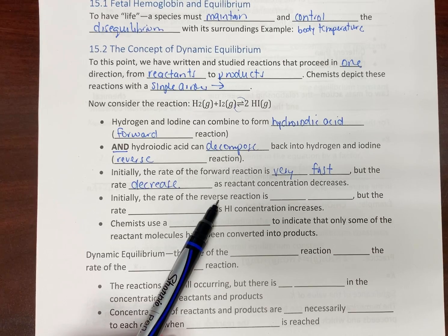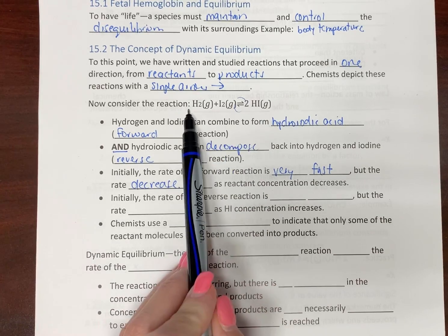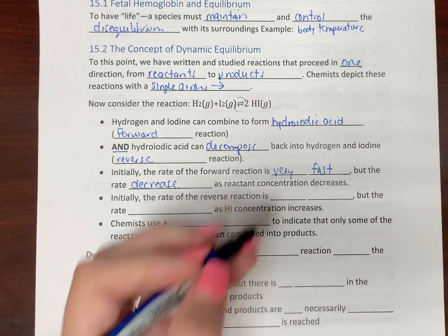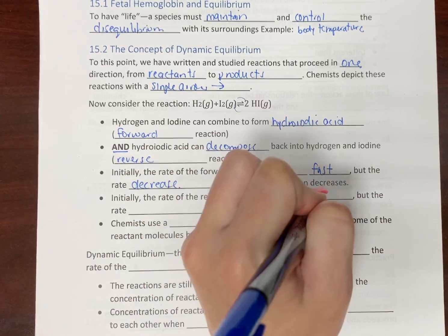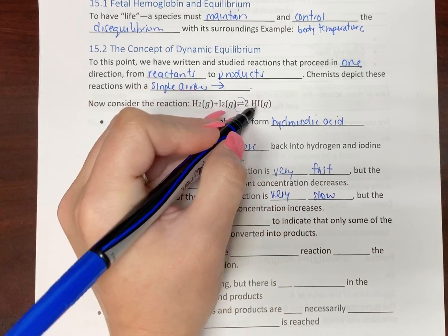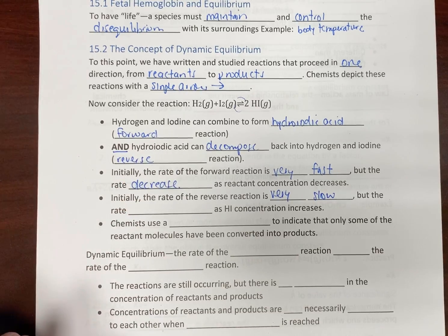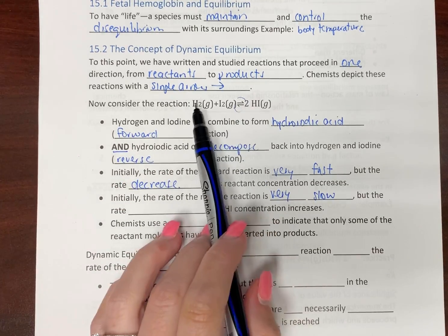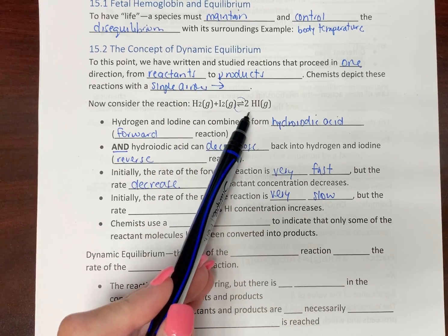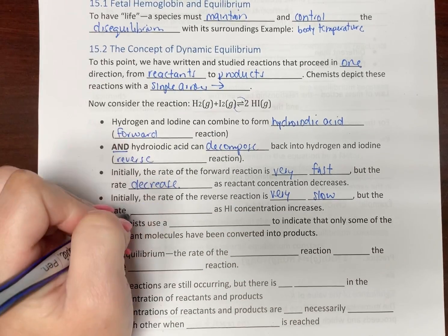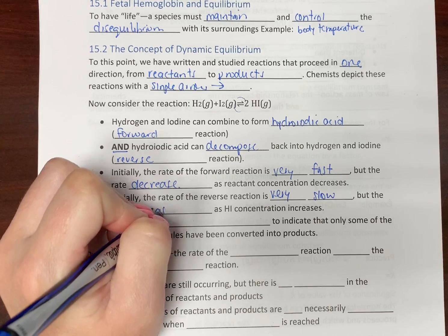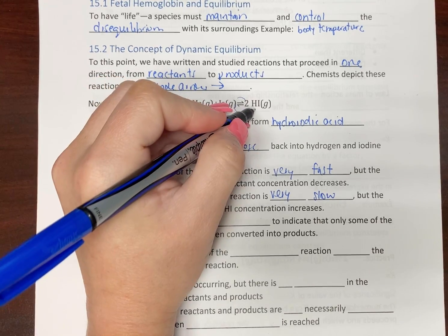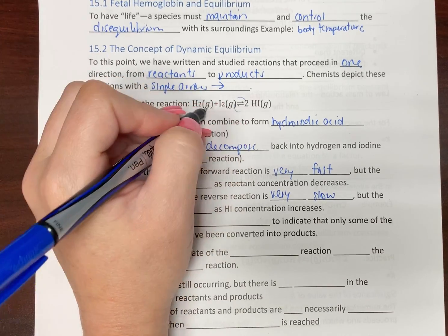Initially, the rate of the reverse reaction, so that would be our decomposition reaction going from right to left, is going to be very slow because we don't have very much hydroiodic acid. But as time goes on, the rate is going to increase because we're forming more hydroiodic acid, so more of it is available to decompose.